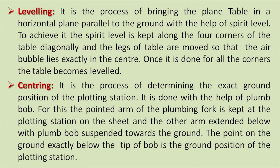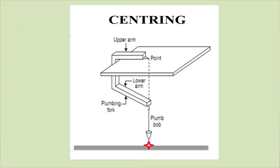The second operation is centering. It is the process of determining the exact ground position of the plotting station, done with the help of a plumb bob. The pointed arm of the plumbing fork is kept at the plotting station on the sheet and the other arm is extended below with the plumb bob suspended towards the ground. The point on the ground exactly below the tip of the bob is the ground position of the plotting station.